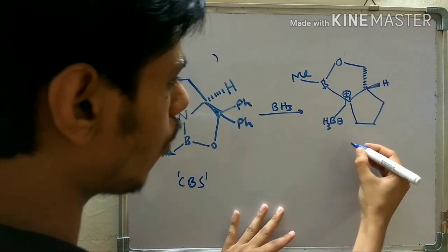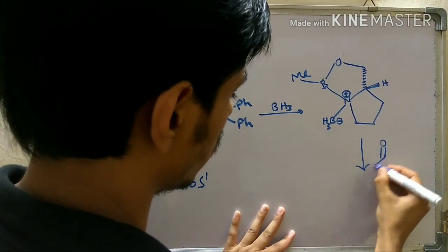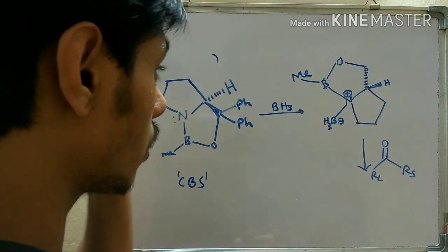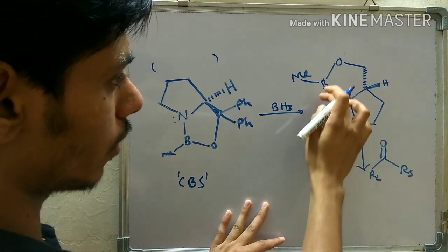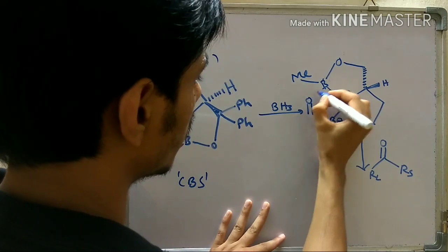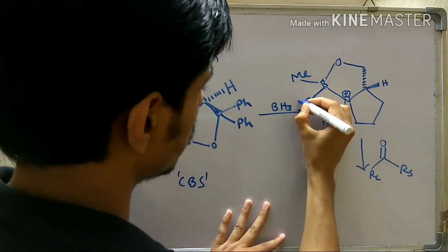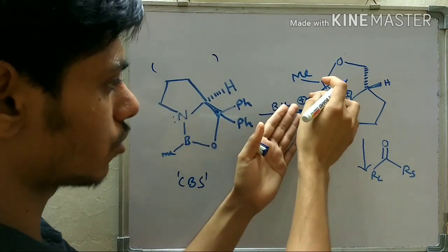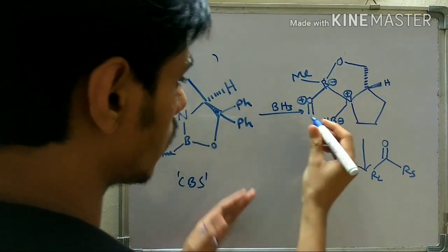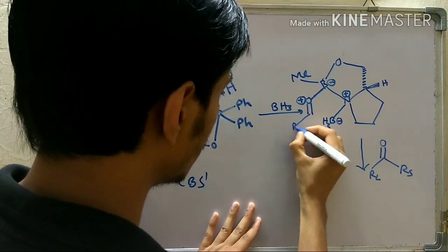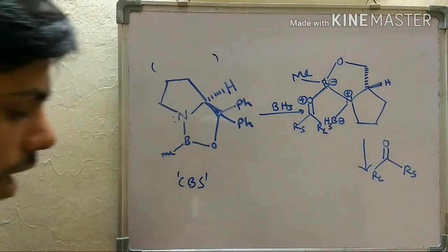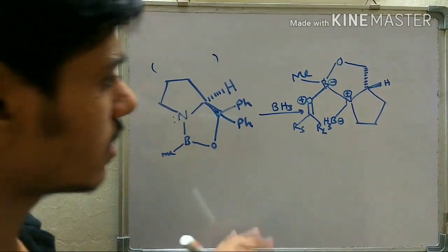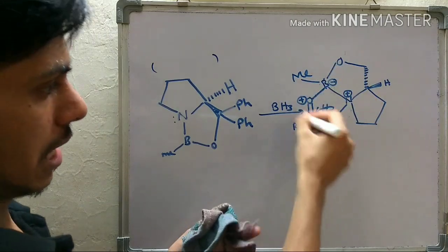Now the ketone — which I represent as RL (large group) and RS (small group) — coordinates with the catalyst boron. The oxygen lone pair coordinates with this boron, so I write the ketone here binding to boron as a full bond. There will be a positive charge on oxygen and a negative charge on boron as electron density transfers from oxygen to boron. You now have two R groups: RL and RS. If I number this transition state — 1, 2, 3, 4, 5, 6 — it is a six-membered transition state.